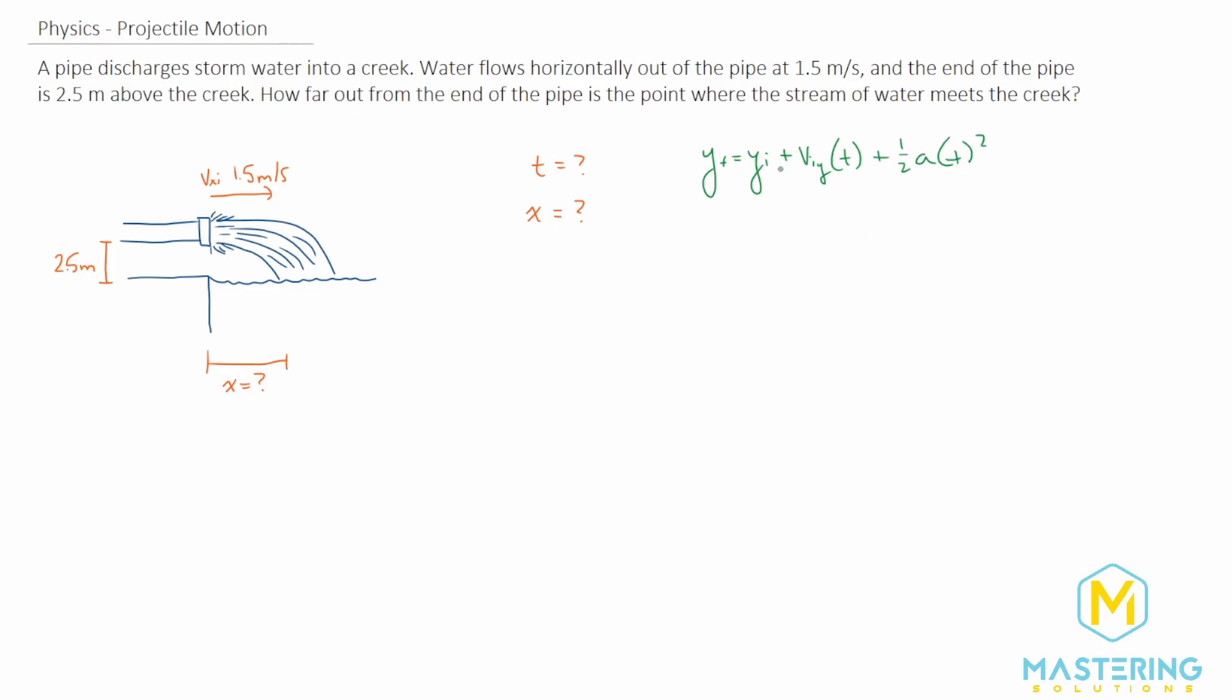The initial y we'll say that right here where the water comes out of the pipe is y equals zero. So here at the bottom of the 2.5 meters will be negative 2.5 meters. So the y initial goes to zero.